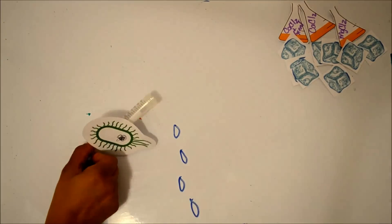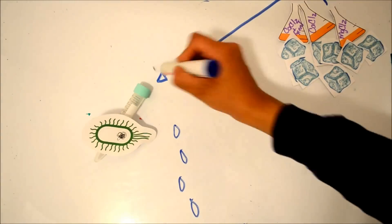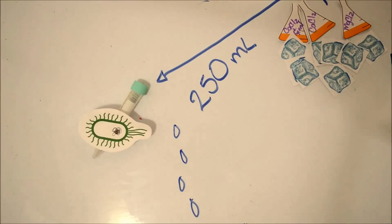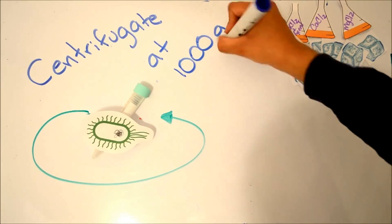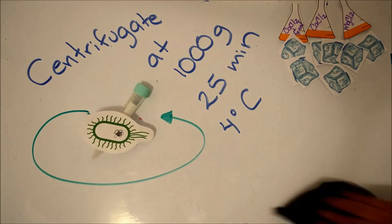Resuspend gently in 250 ml of magnesium chloride solution. Centrifuge at 1000 g at 4 degrees for 25 minutes. Decant the supernatant.